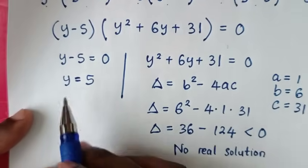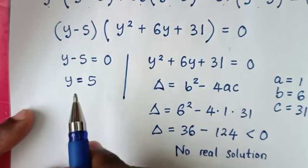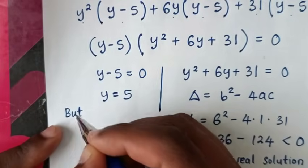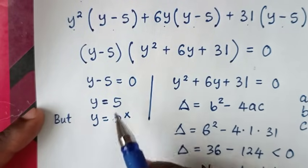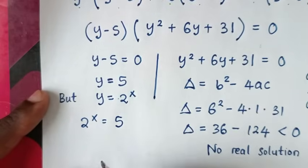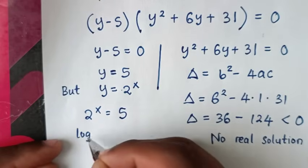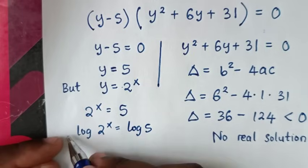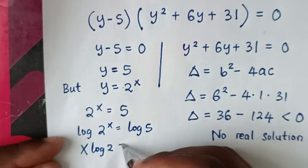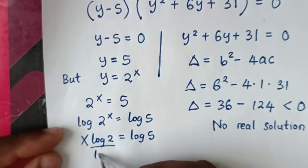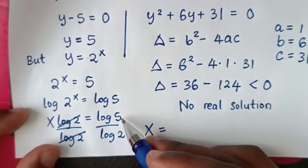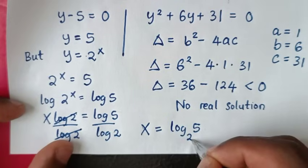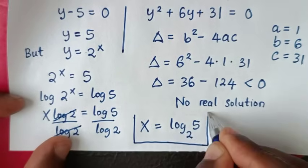We want to get the real solution, because y equal to 5 is not our final answer — we are supposed to find the value of x. We recall that we let y equal to 2 power of x. So from y equal to 2 power of x, substituting y equal to 5, it will be 2 power of x is equal to 5. Then we apply log on both sides: log of 2 power of x is equal to log of 5. This power of x moves to the front: x log of 2 is equal to log of 5. Dividing both sides by log of 2, this and this will cancel, so x is equal to log of 5 over log of 2, which is the same as log base 2 of 5. Therefore, this is the final answer for the value of x.